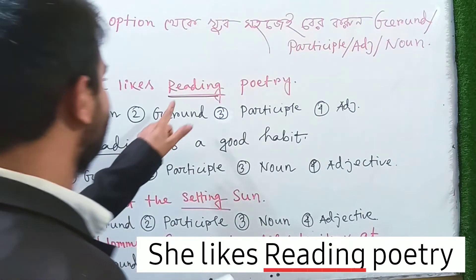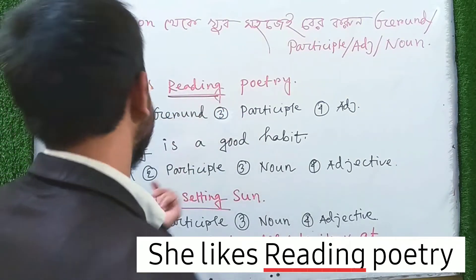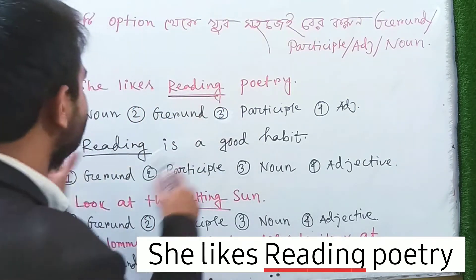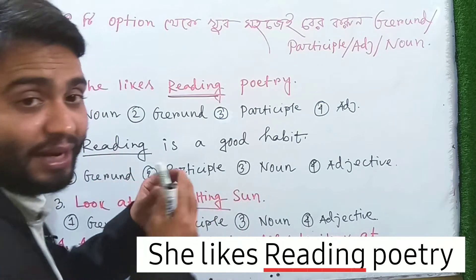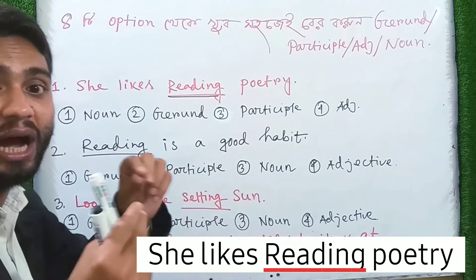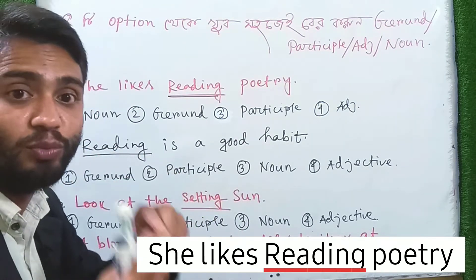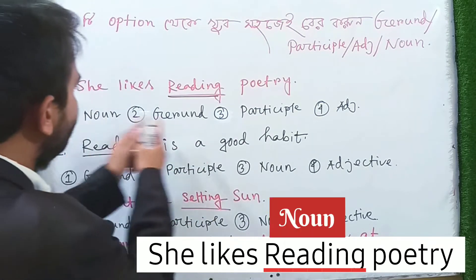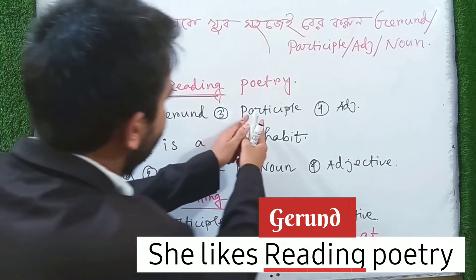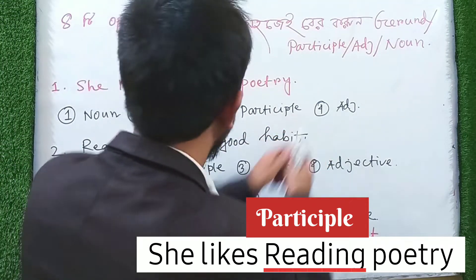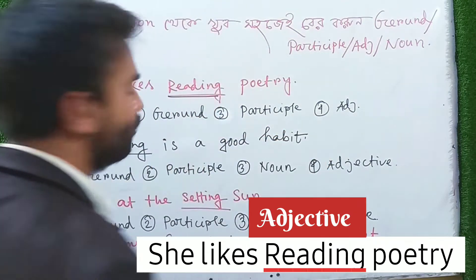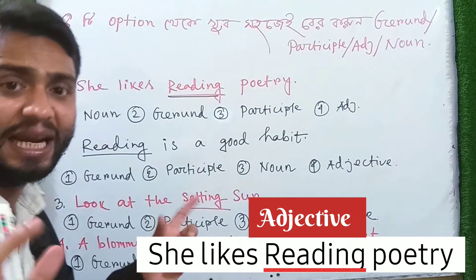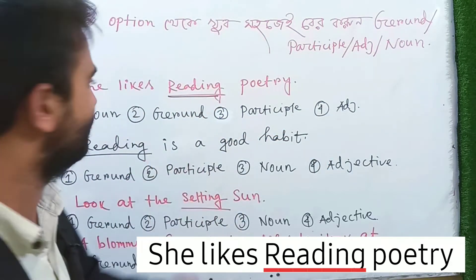In this sentence, the underlined word is used as — in this sentence the options are: noun, gerund, participle, or adjective. If you know that it's a gerund, not a participle, you need to identify it correctly.